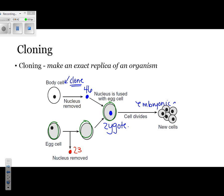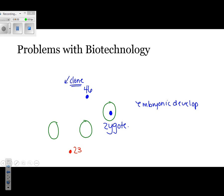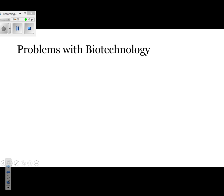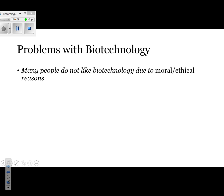Since it's undergoing embryonic development, eventually, if everything works out right, it's going to make offspring. Why do we not do all of this with humans? The main reason is because of the moral and ethical complications that occur. Many people do not like biotechnology because they say that they're playing God. The two terms you'll most likely see on the exam are moral and ethical.